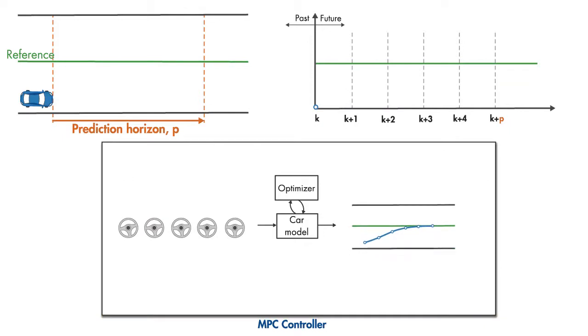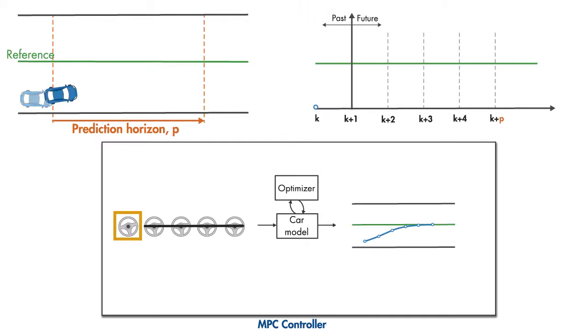At the current time step, MPC applies only the first step of this optimal sequence to the car and disregards the rest. Based on the applied steering wheel angle, the car travels some distance.